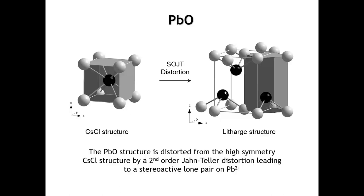Second-order Jahn-Teller distortions also occur frequently in D0 transition metals with relatively high valence — such as Mo⁶⁺, Nb⁵⁺, Ta⁵⁺, and Ti⁴⁺. These can undergo second-order Jahn-Teller distortions that cause the cation to shift out of the center of its coordination polyhedron. Those are discussed in Chapter 8 and may come up in further coursework.